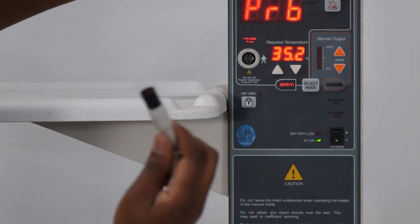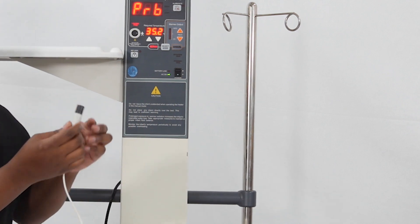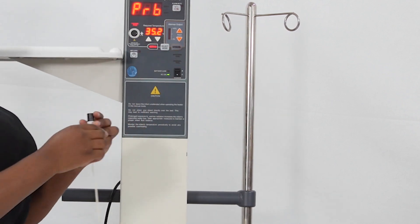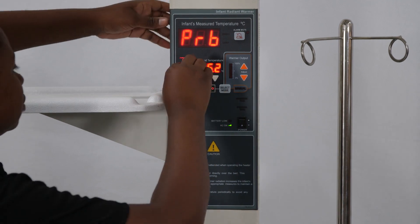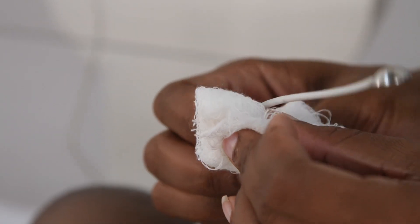The most delicate part of the warmer is the cord for the temperature probe. Be careful not to kink or bend the cord while you are using it. If you are storing these, do not bend or fold it.